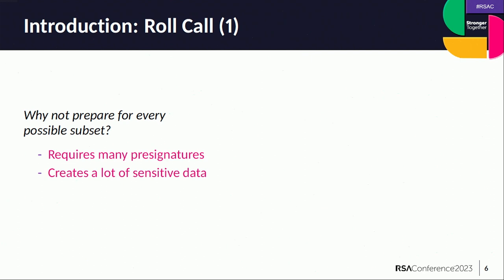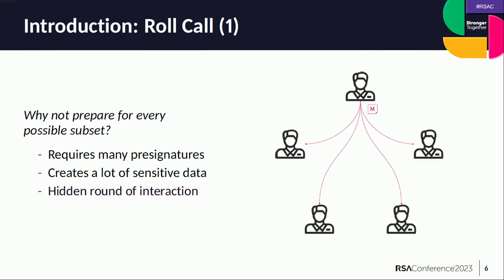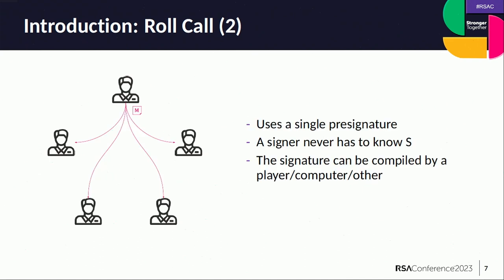There is also another issue: a hidden round of interaction that people were not discussing. Even if you prepare all possible groups, when the top person wants to sign a message and sends it to everyone else, they can't send their signature share without knowing who else is signing with them. They need to wait until at least two others answer to say they want to sign together. Then and only then can they all compute their signature share, which is dependent on who else is signing. There is this hidden round of interaction of having to choose who is going to sign — and this is what I call a roll call.